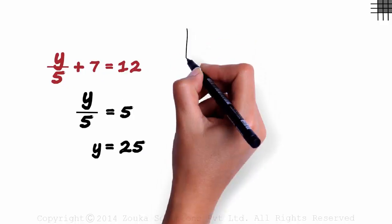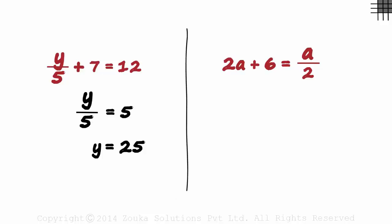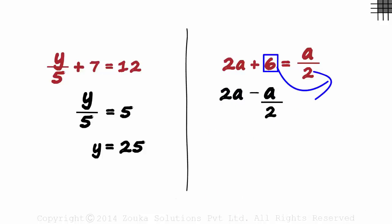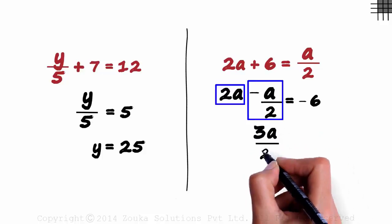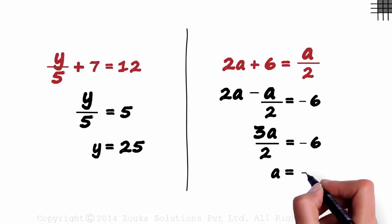Pause the video and try solving the second example on your own. As we need to find the value of a, let's try getting all terms with a on the left hand side, and we can simultaneously transpose 6 to the other side. We get 2a minus a over 2 on the left hand side, and 6 when transposed to the right becomes minus 6. 2a minus a over 2 gives us 3a over 2. Transposing 3 and 2 to the right, we get the value of a as minus 4.